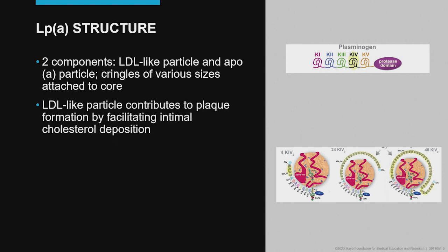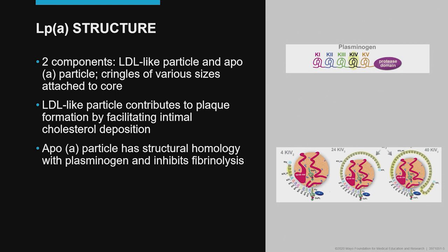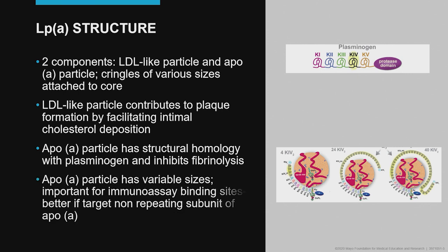The LDL particle contributes to plaque formation — we know that the LDL-like particle facilitates cholesterol deposition in the intima. At the same time, the ApoA particle has structural homology with plasminogen and inhibits fibrinolysis, therefore contributing to thrombosis in animal models. The ApoA particle has variable sizes, and this is important for immunoassay binding sites. The assays are better if they have epitopes located in the non-repeating subunits of ApoA than if they have antibodies directed to the repeating subunits of ApoA.